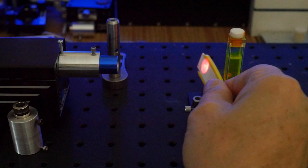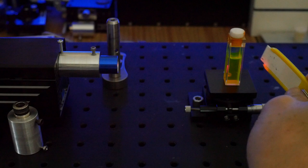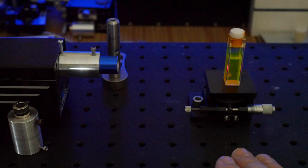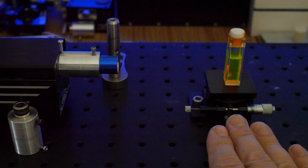If I place Rhodamine 6G into the beam path, once again we can see that no fluorescence actually occurs. In fact we can actually see the beam emerging from the other side of the cuvette. This is because two-photon absorption depends on the square of the intensity of the incident light, and so to see this effect we need an extremely high light intensity.